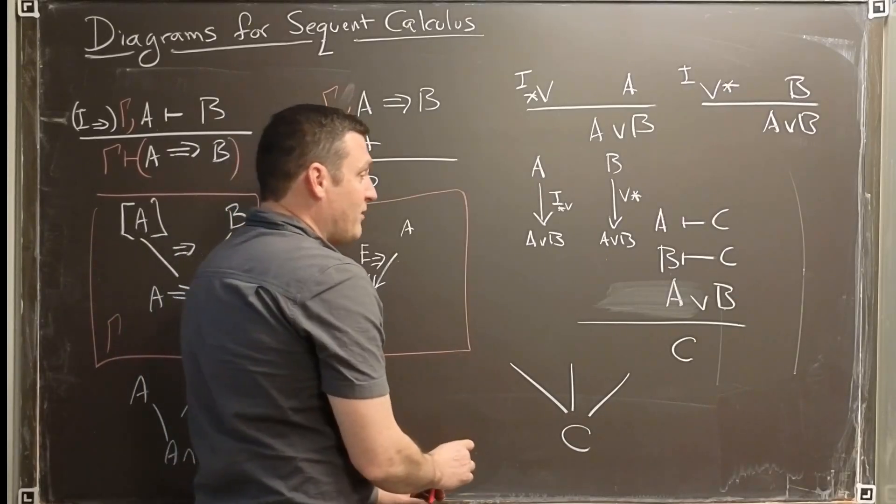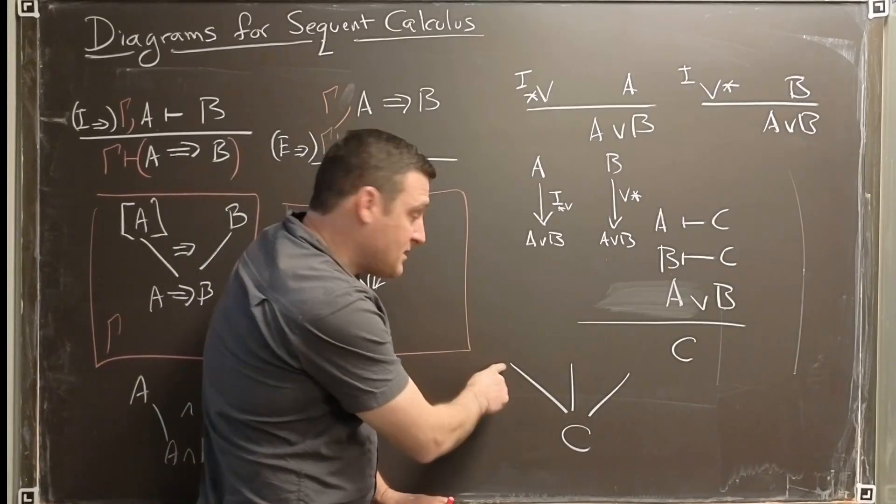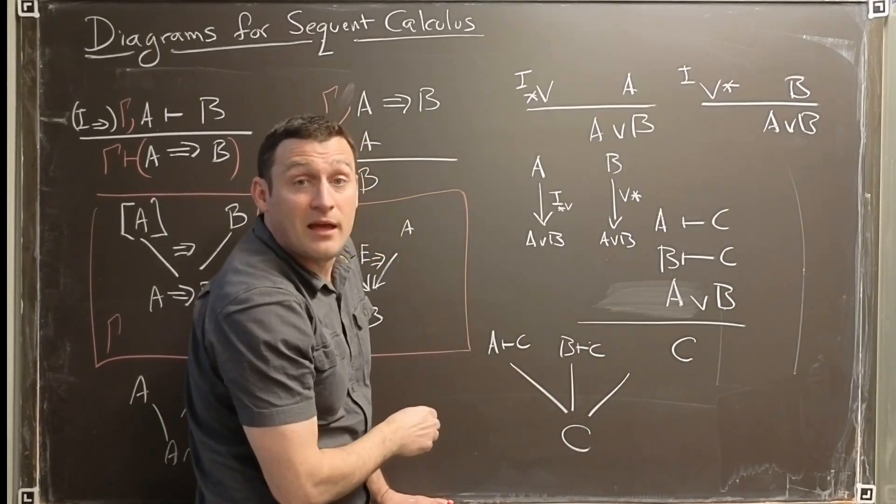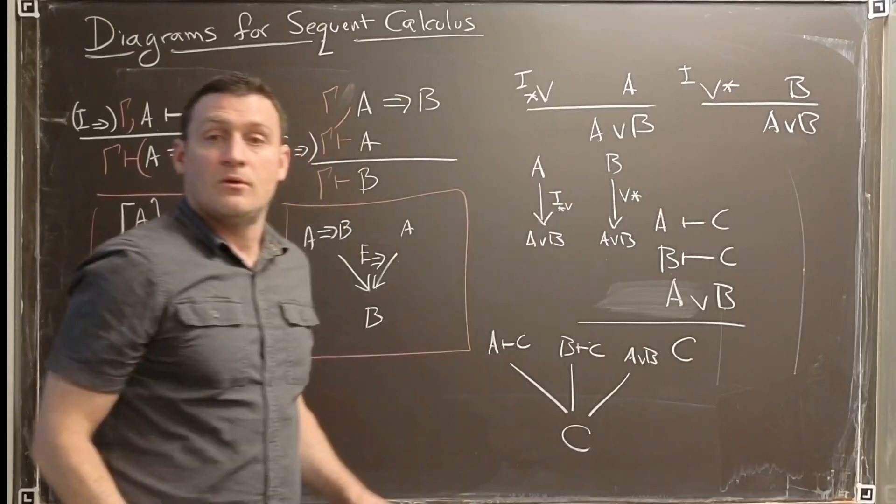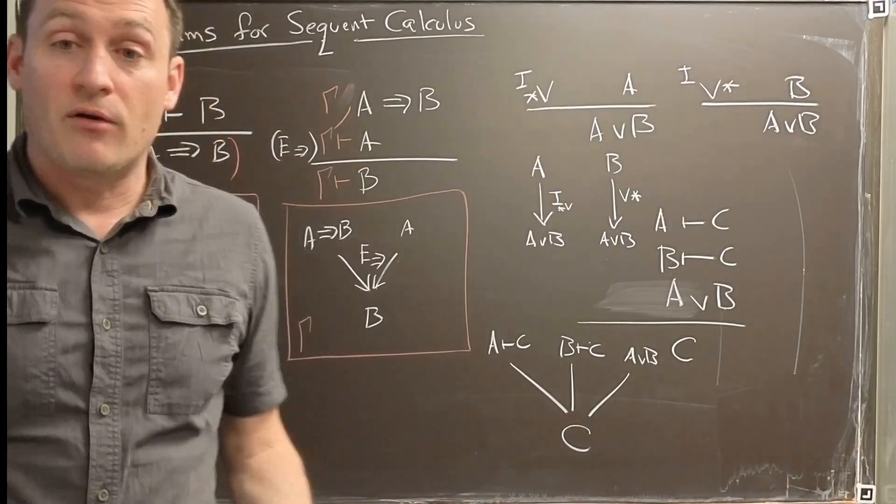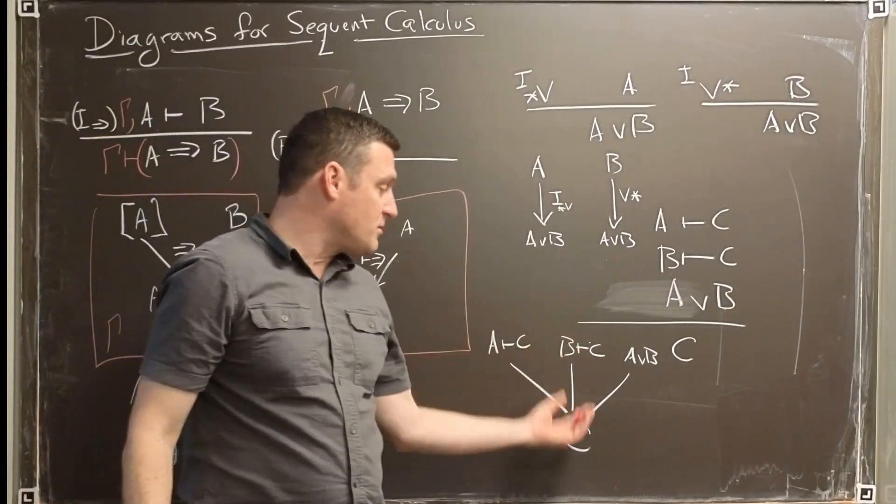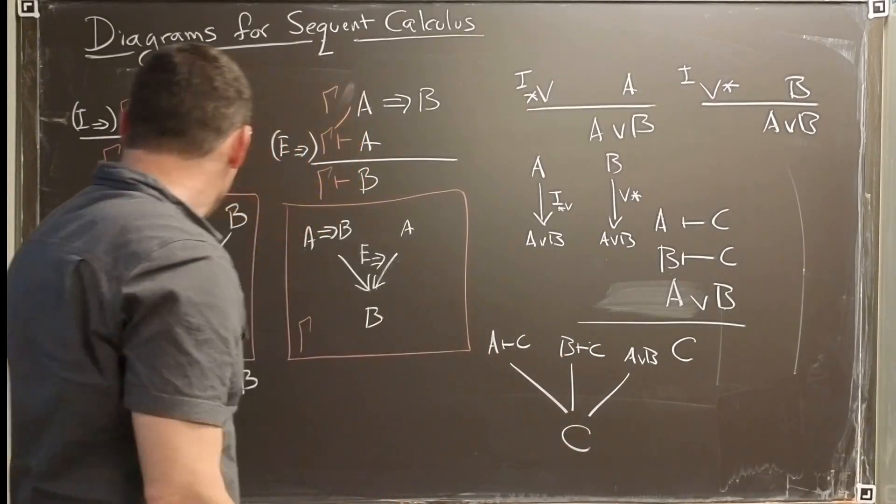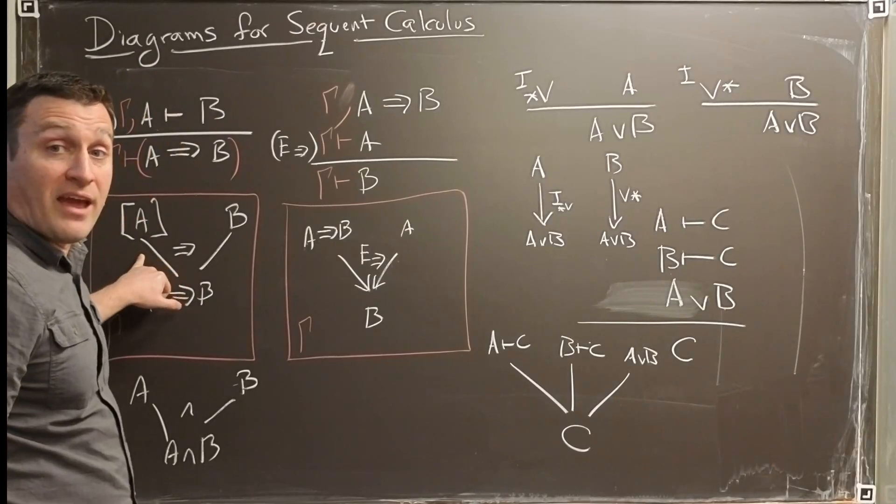So what we have here is that A has to lead to C. We also have that B leads to C, and then we also have that A or B is true. If we draw it like this, we see now that the data is taking three terms and combining them to C. In fact, we could go one step further. Just like we did here, where we think of A as optional, we could break these up into two separate parts.